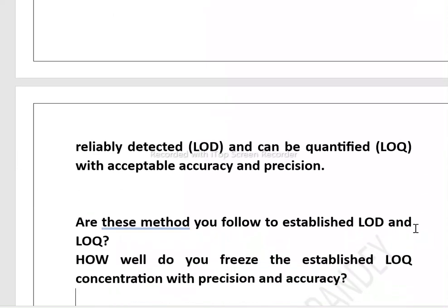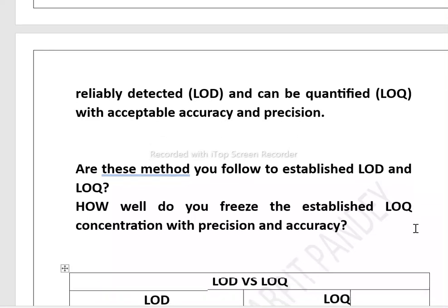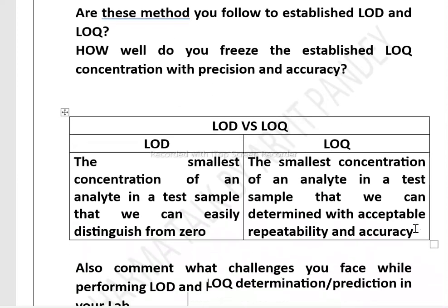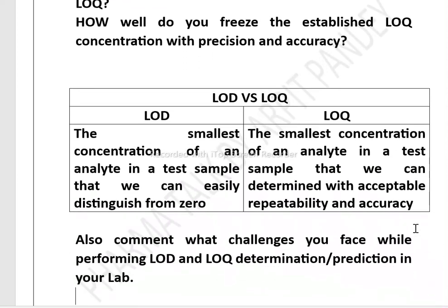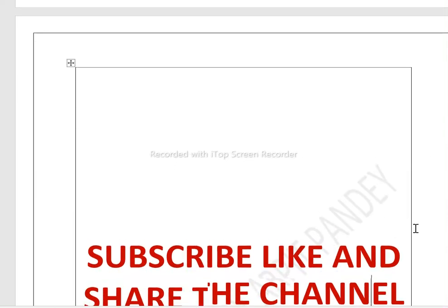I have some questions for you — please answer in the comments. Are these the methods you follow to establish LOD and LOQ precision in your lab? If yes, how well do you achieve the established LOQ concentration with precision and accuracy? The basic difference between LOD and LOQ: LOD is the smallest concentration of analyte in a test sample that we can distinguish from zero; LOQ is the smallest concentration of analyte that we can determine with acceptable repeatability and accuracy. Also comment on what challenges you face while performing LOD/LOQ determination in your lab.